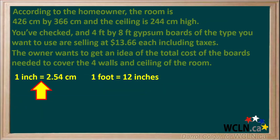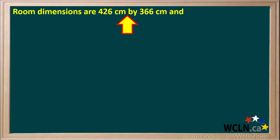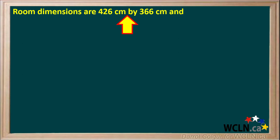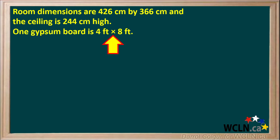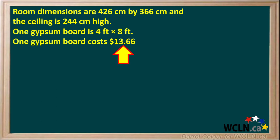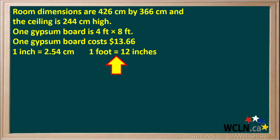In addition to the information above, you know that one inch is equal to 2.54 centimeters and one foot is equal to 12 inches. To summarize: the room dimensions are 426 cm by 366 cm, height 244 cm; gypsum boards come in 4 ft by 8 ft sheets at $13.66 per board including taxes; and one inch equals 2.54 centimeters, one foot equals 12 inches.